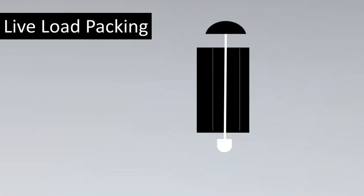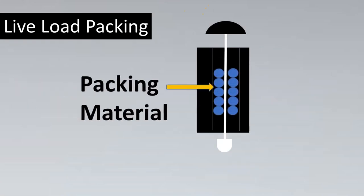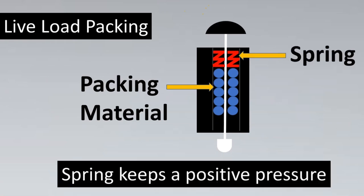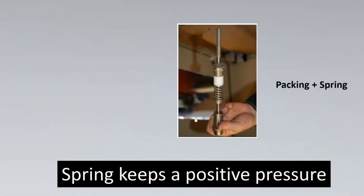The first concept is called live load packing. Imagine this is your packing material put in the valve. In normal operation, the valve keeps throttling and flowing, but eventually the packing is going to get worn out and may not be able to provide sufficient pressure. Engineers came up with a spring that creates a positive pressure on the packing material. In a real-life example, the white thing is the PTFE packing and you can see a spring assembly that puts positive pressure to keep the packing in place.